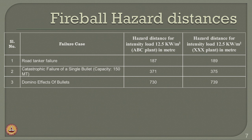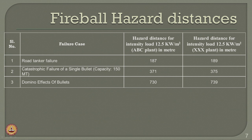Based on this, we determined fireball hazard distances for different kinds of failure — road tank failure, catastrophic failure of a single bullet of 150 metric ton capacity, and domino effects of bullets. At a thermal intensity of 12.5 kilowatt per square meter, the domino effect generally has greater hazard distance compared to road tanker failure. The domino effect, being a cascading failure of series of bullets, has more hazard distance at both locations. However, the fireball hazard distance is not significantly influenced by the geographic location of the plant, even with different stability classes and wind velocities.